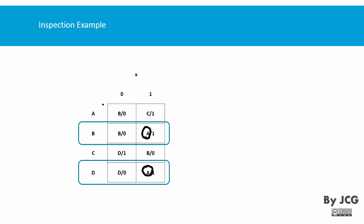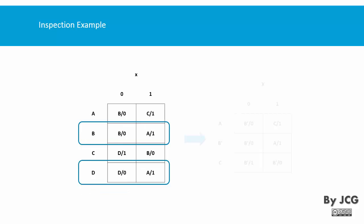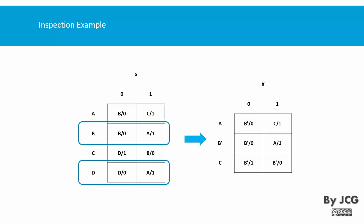However, when x is 0, one goes to B and the other goes to D. But B returns to itself and D also returns to itself, so if we combine them we can say that when x is 0 it returns to itself. Because of this, the table is reduced: instead of four states, we have three states with exactly the same behavior.